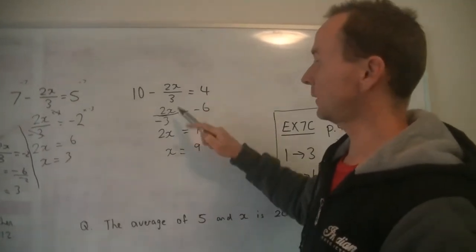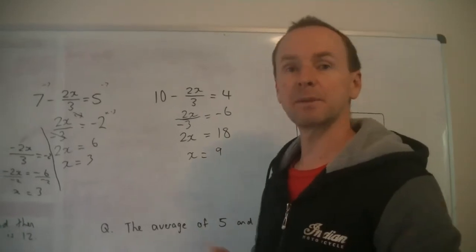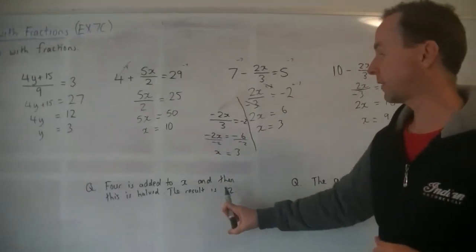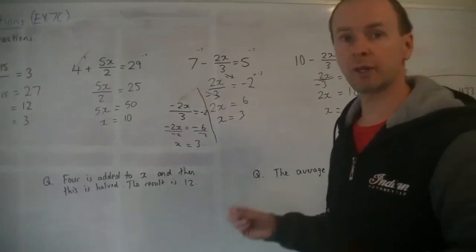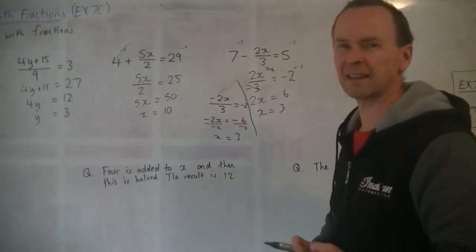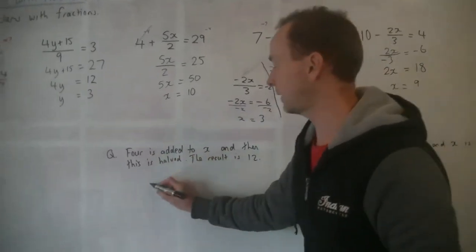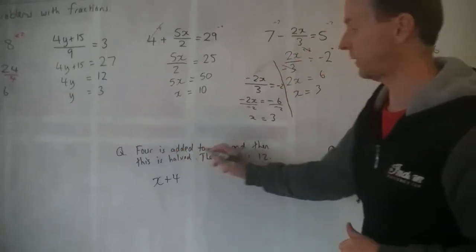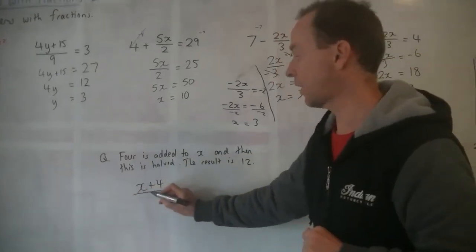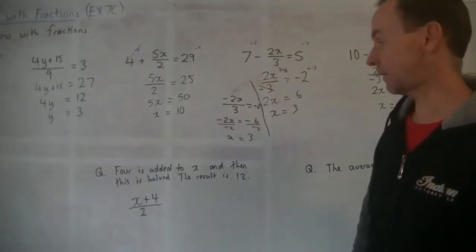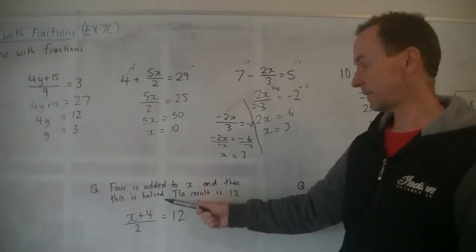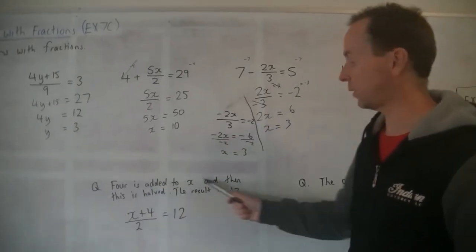Alright, I want you to think about that one with a negative. That's very tricky. That's where people make mistakes. Alright, let's do some worded questions now. 4 is added to x and then this is halved. The result is 12. It's always a good idea to read the whole thing first. 4 is added to x. Some people write 4 plus x and that's technically not right. It says 4 is added to x. So there's x and we're adding 4 to x. Does that make sense? 4 is added to x. And then this is halved. Okay, so the whole thing is divided by 2 because it's halved. Then it says the result is 12. Okay, so from those sentences we've got this equation. That's hard.